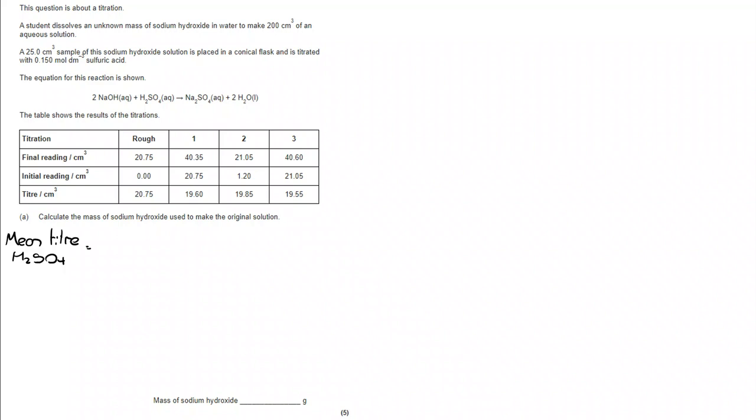In the first instance, we need to find the mean titer of H2SO4. I'm going to use 19.60 and 19.55. I'm not going to use my rough titer. It's very far away, definitely not concordant, and you would never include the rough titer or first titer in your mean. I'm also not going to use 19.85 because it's not concordant. It's not within 0.10 cm³ of my others.